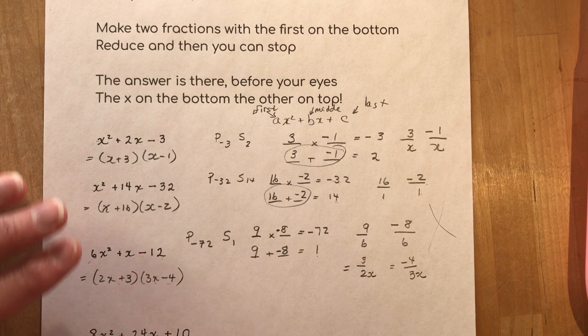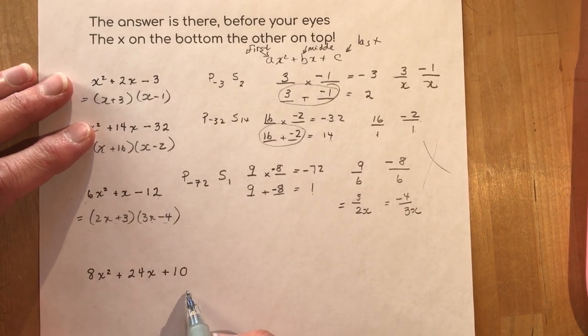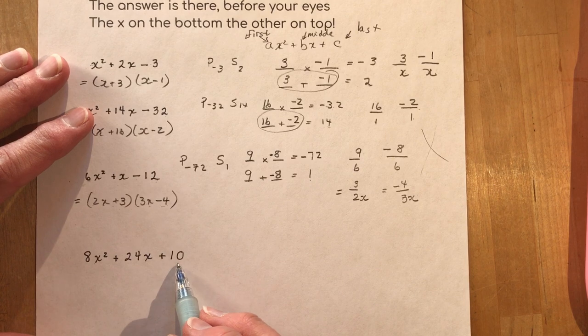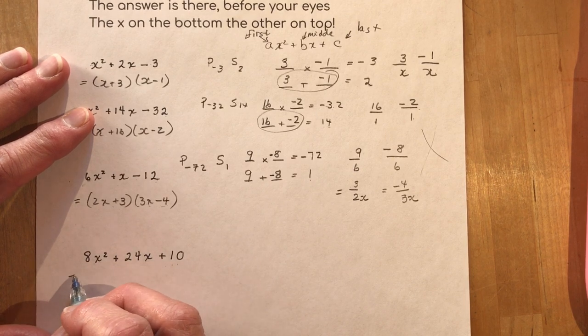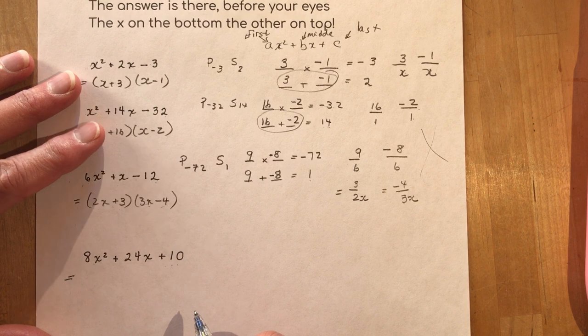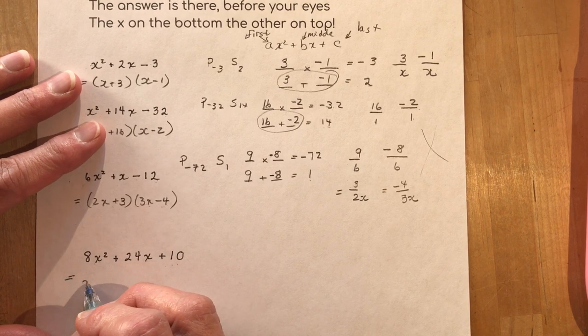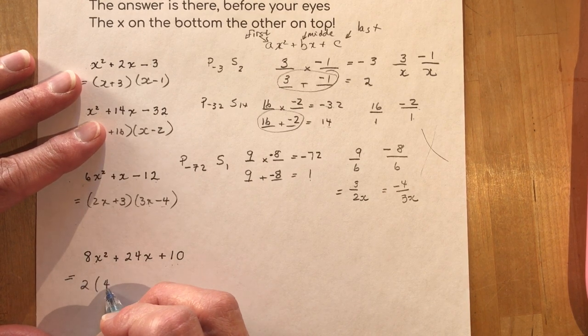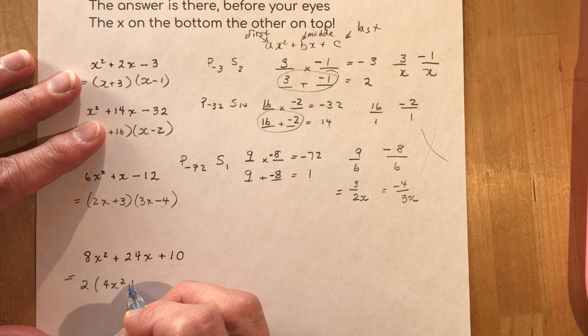Now this one 8x squared plus 24x plus 10. Now this time you have to look for a common factor. I threw this one in here just to make sure that you would do that first. So I can take out a two out of all these first.